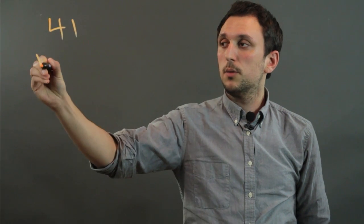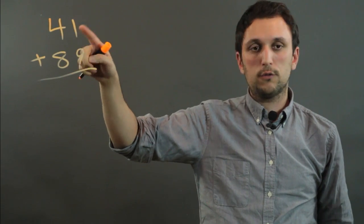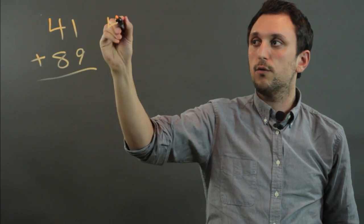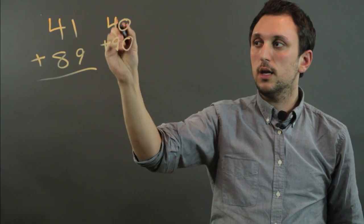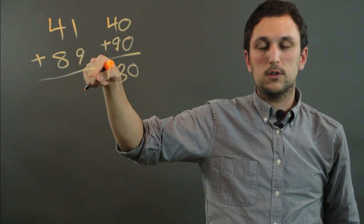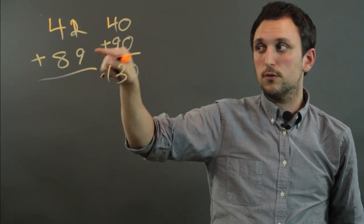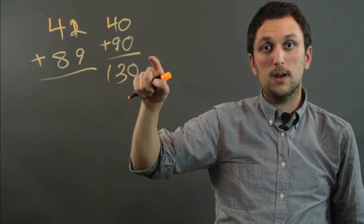So front-end estimation is basically like saying 41 plus 89 and you can estimate by saying well this is close to 40 and this is close to 90 so 40 plus 90 is 130. And this one also happens to be 130 but if we change this to a 2 we would still estimate it the same way, it's close to 40, close to 90 so it's estimated at 130.